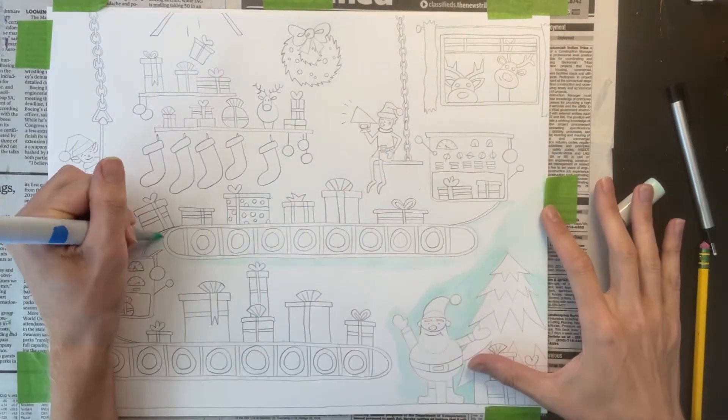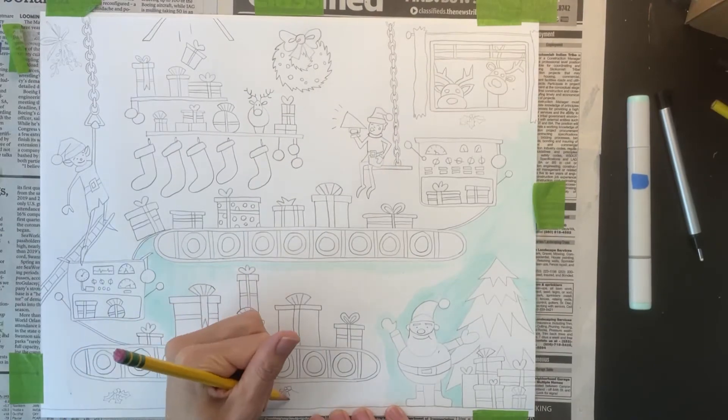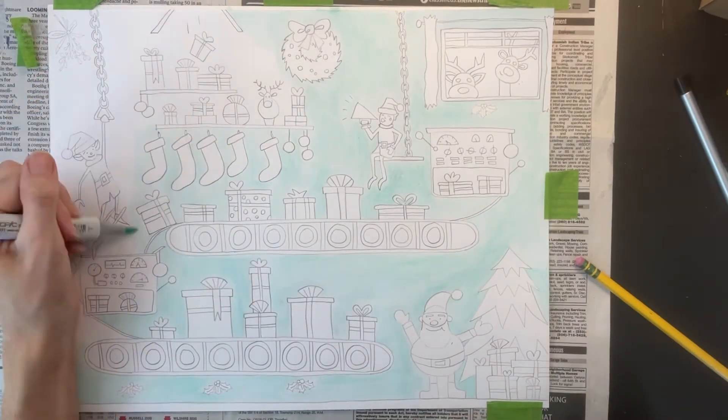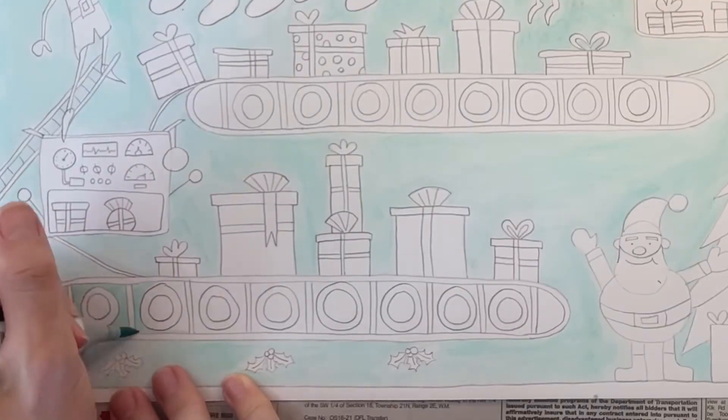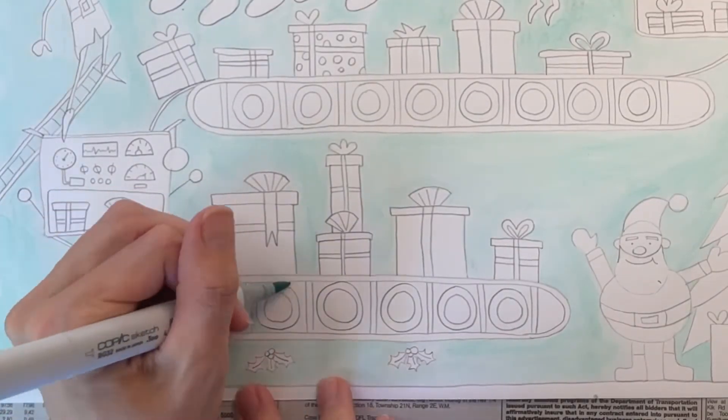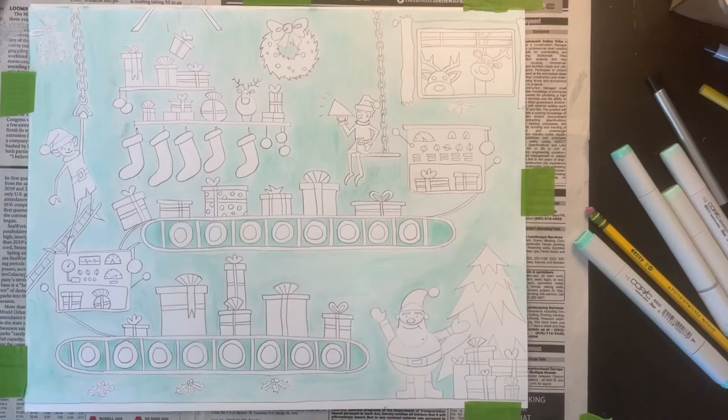I recommend using a super light color for the background. I don't like to use a dark color for the background because it makes it harder to see the objects in your picture. I'm using a marker for this, but you might find you prefer to use colored pencils. It's really up to you.